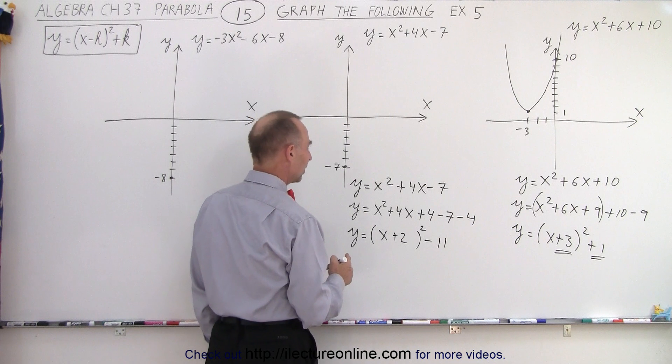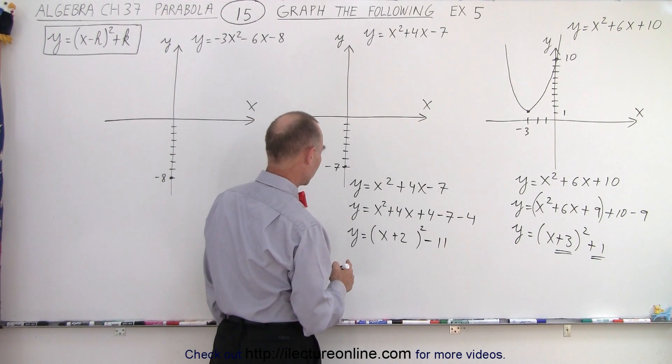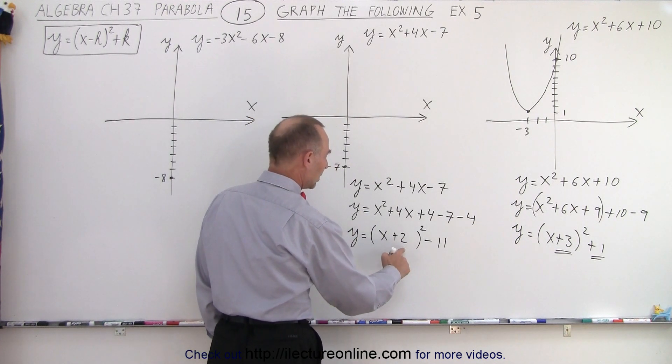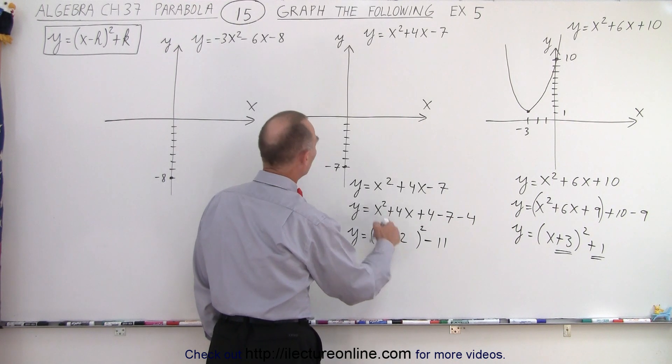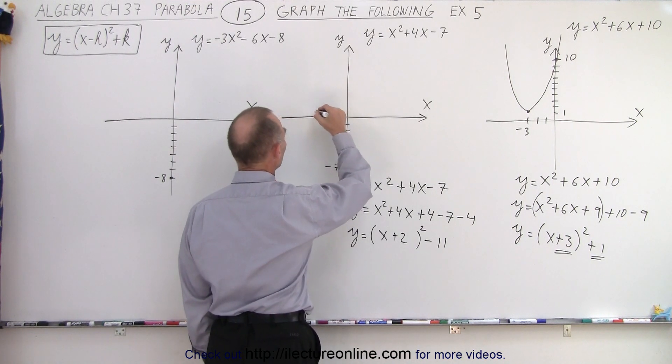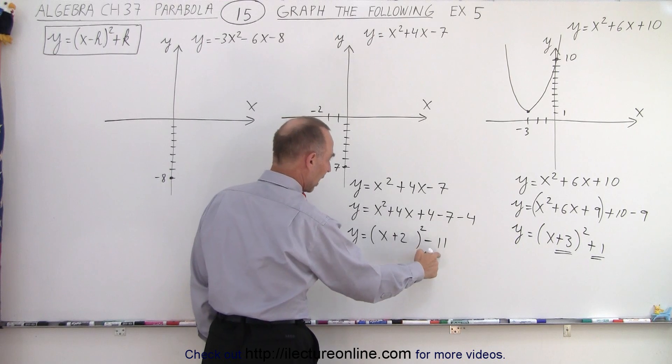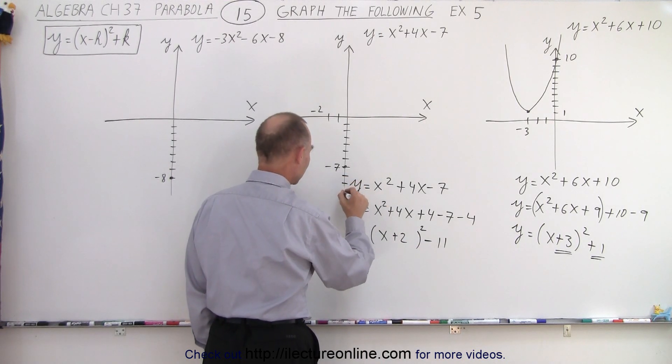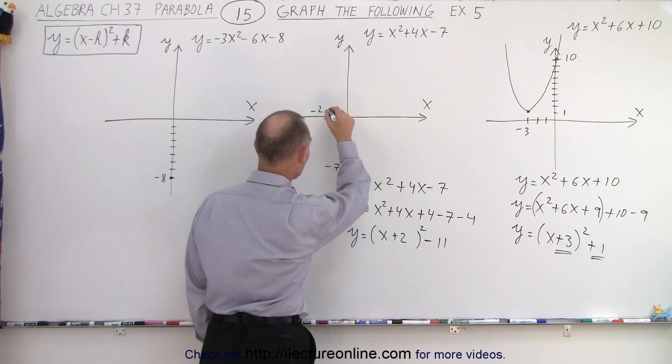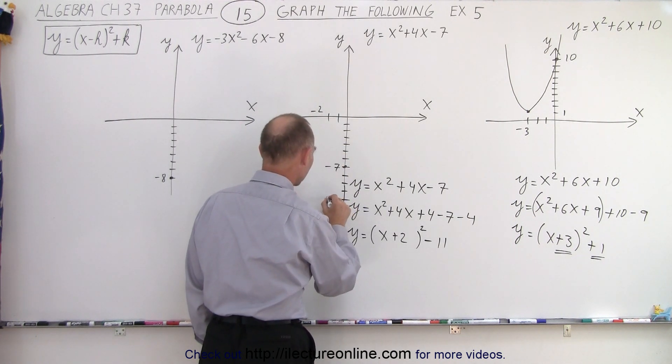So that means that, oh I'm running out of room here. So the shift to the left is 2, 1, 2, minus 2. And the shift down is 11. So that's 8, 9, 10, 11, minus 11. That means my vertex is negative 2, negative 11 right over there.